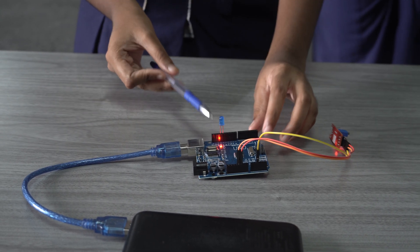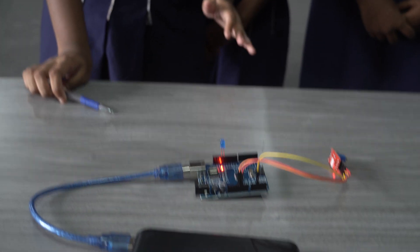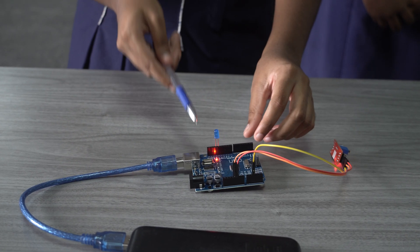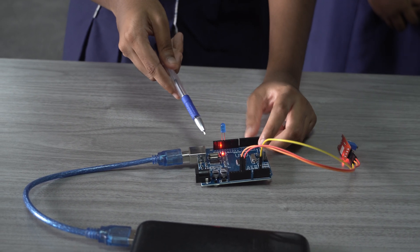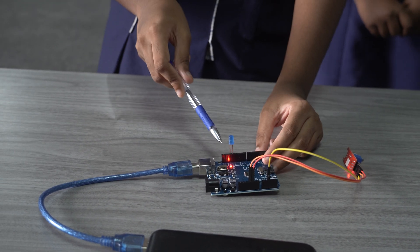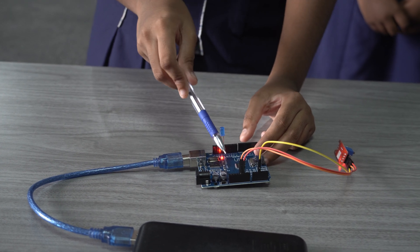At last, we have to connect the positive pin of the LED bulb to pin 13 on the Arduino board. Then, we have to connect the negative pin of the LED bulb to ground on the Arduino board.